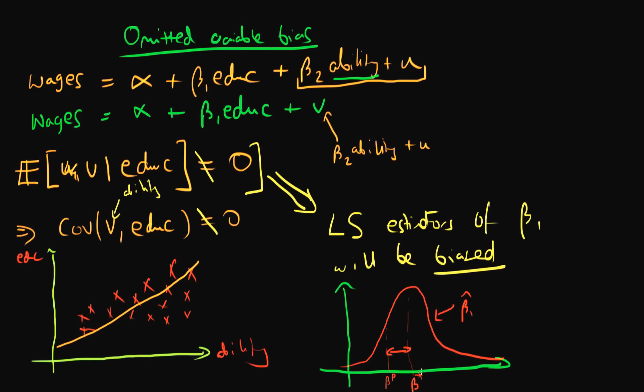So essentially, if we were to take loads of samples from our population, then on average, we would estimate this parameter incorrectly. Well, you can ask, well, in which way will we misattribute the return on one year's education to wages?